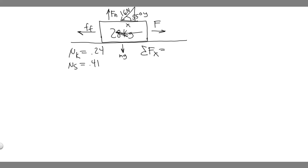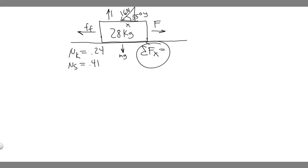What forces do we have going in the opposite direction? We have the force of friction going one way, and we also have the x component of the 16-newton force going the opposite way. So we need to overcome those two forces. When we take the sum of the forces in the x direction, we get: sum of forces in x equals ma. But the object isn't moving, so it's not accelerating — it equals zero.